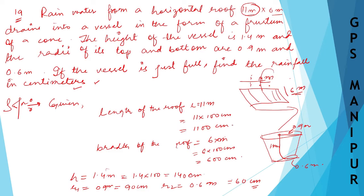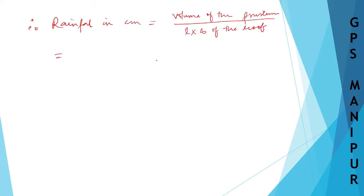So volume, first, volume of this frustum divided by length into breadth of the roof. If you do this much, you are going to get the rainfall. So before that, volume of the frustum is 1/3 π h (r1² + r1·r2 + r2²), divided by length into breadth of the roof.